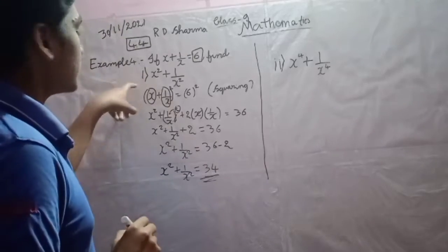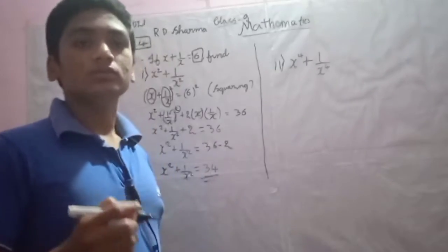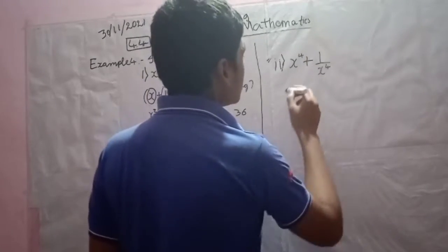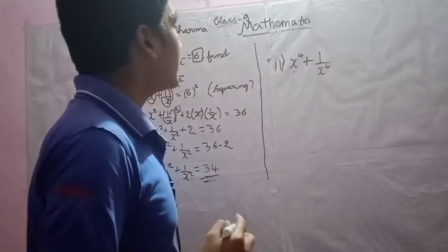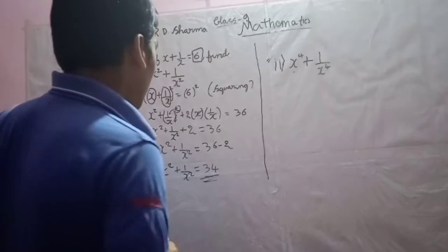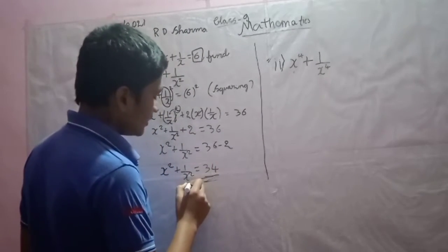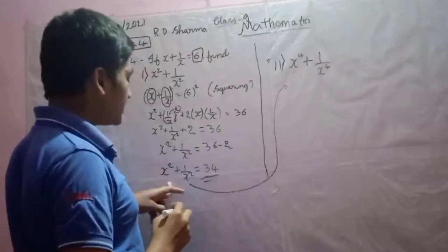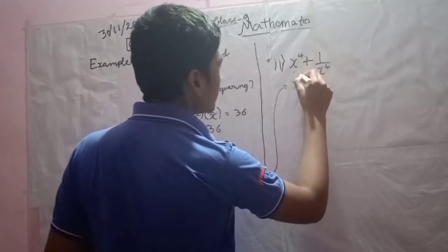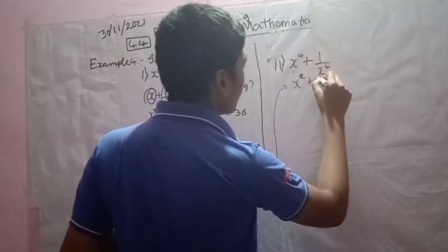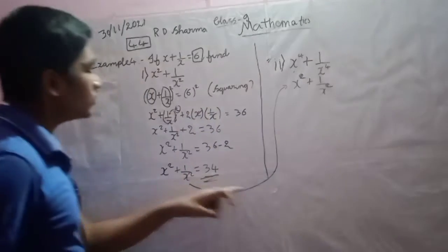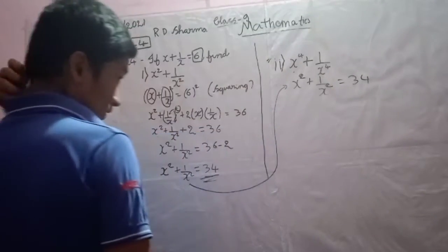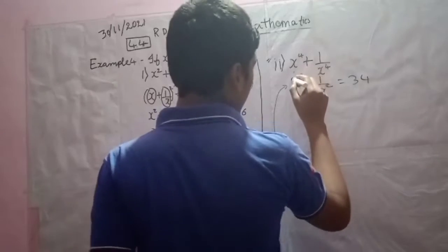That is the answer for the first sub-part. Now let us solve the second part. The question asks for x to the power 4 plus 1 divided by x to the power 4. We will use the result from the first sub-part to solve this. That result is x squared plus 1 by x squared equals 34.